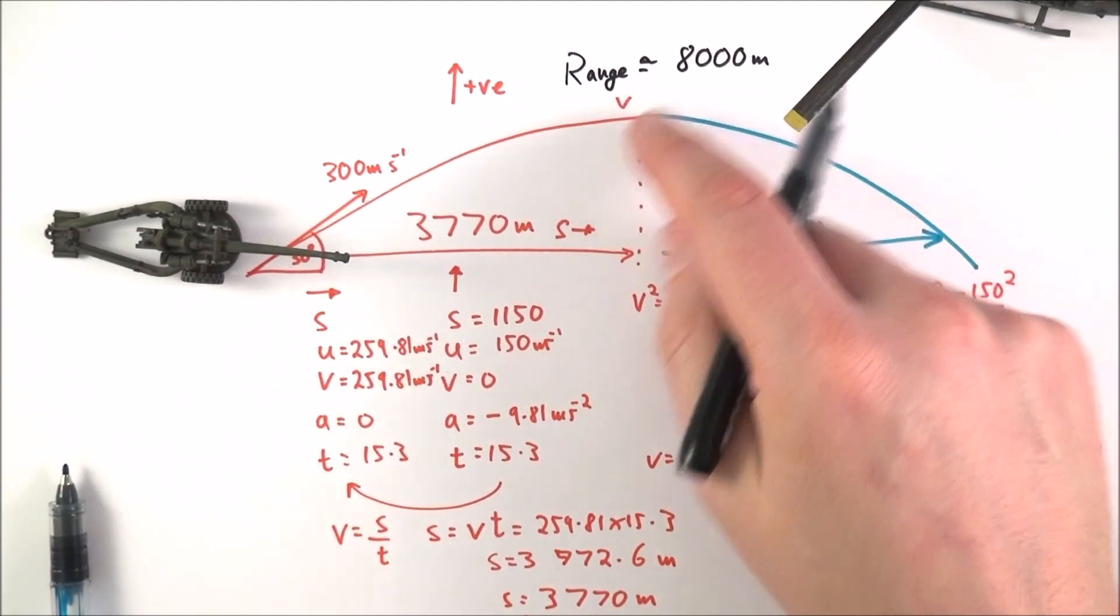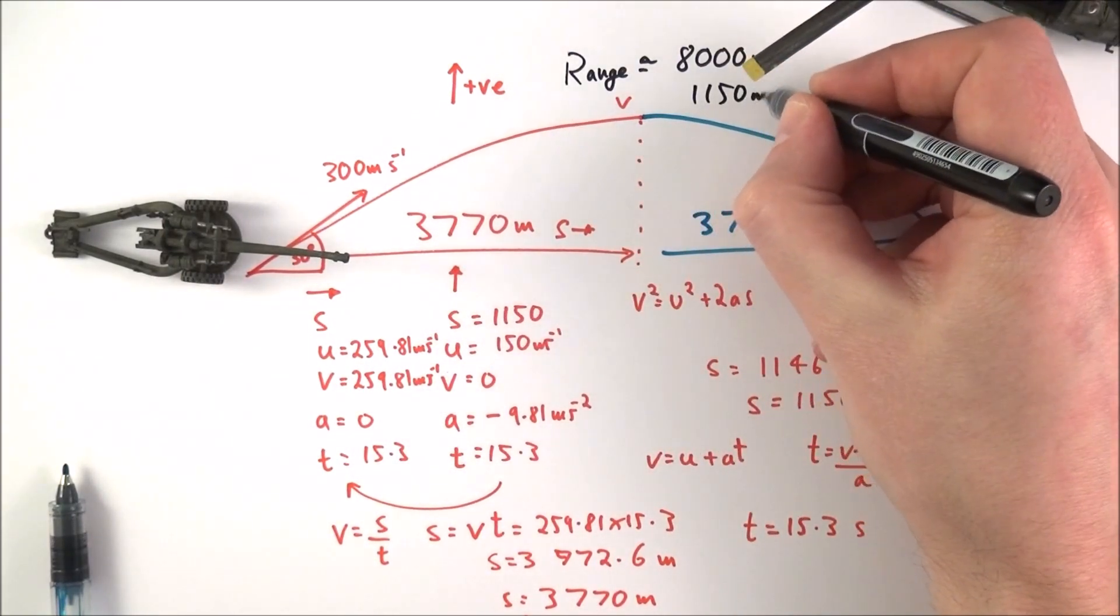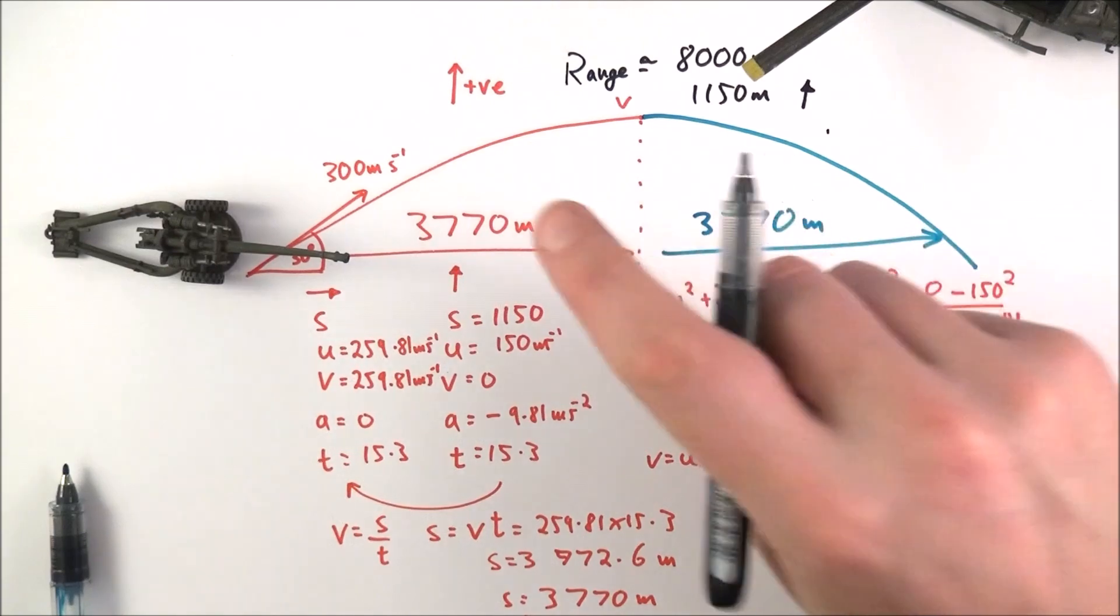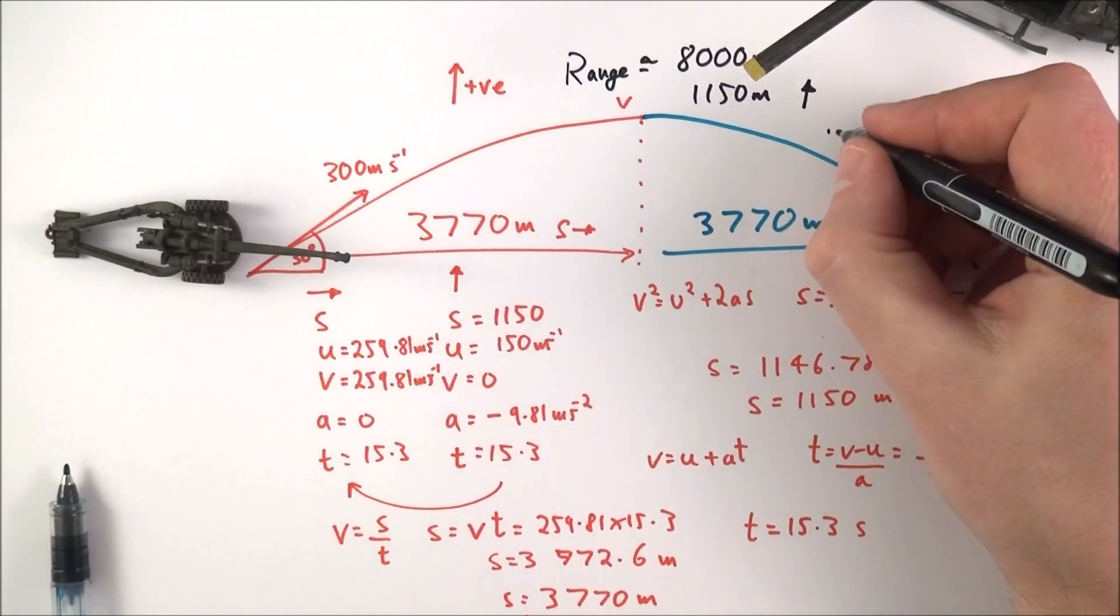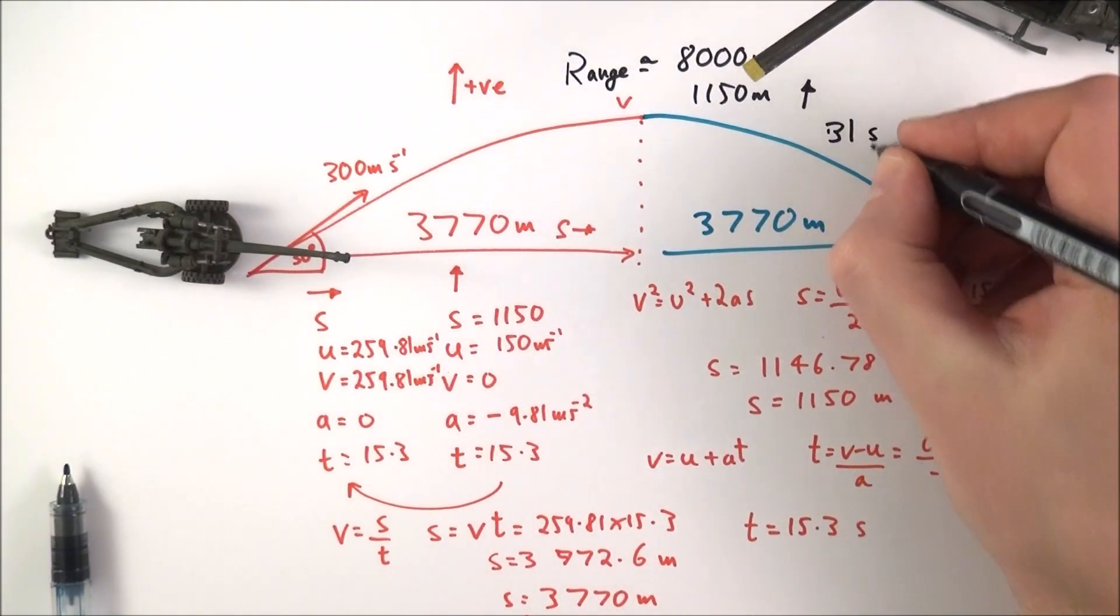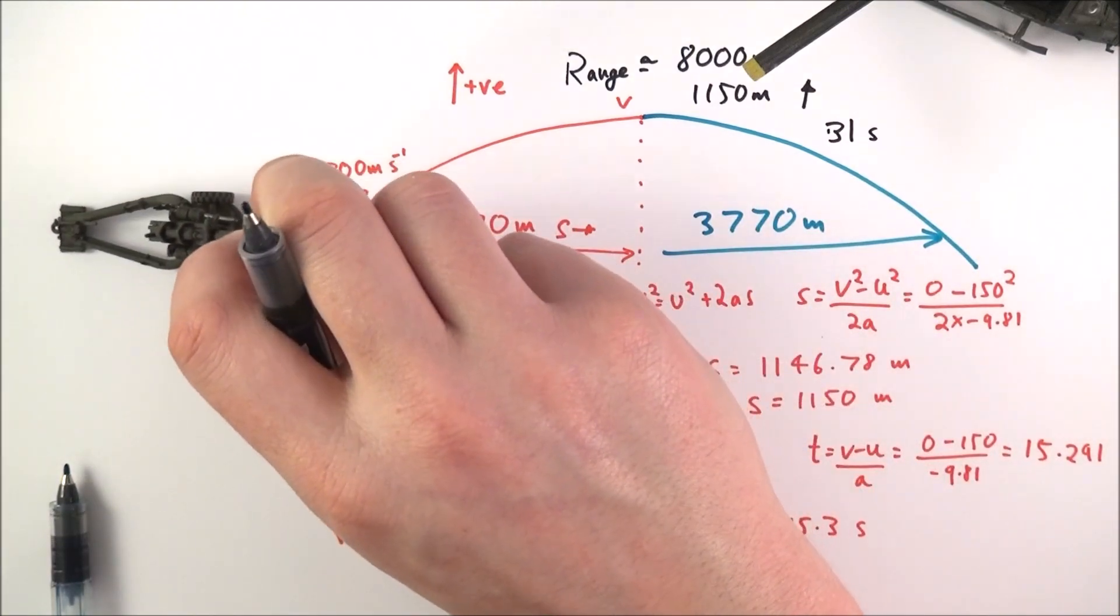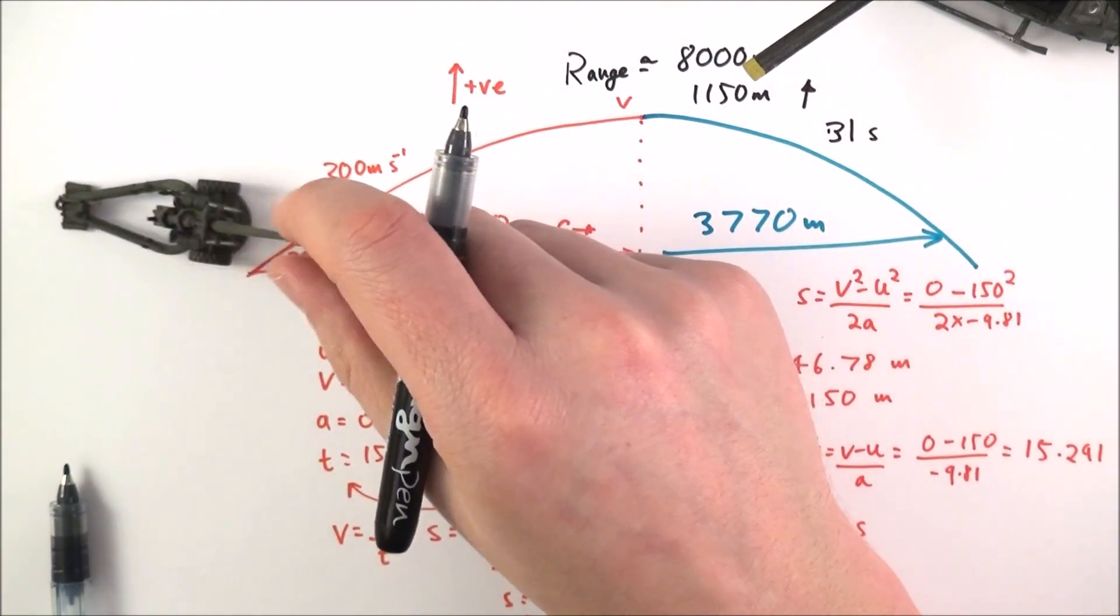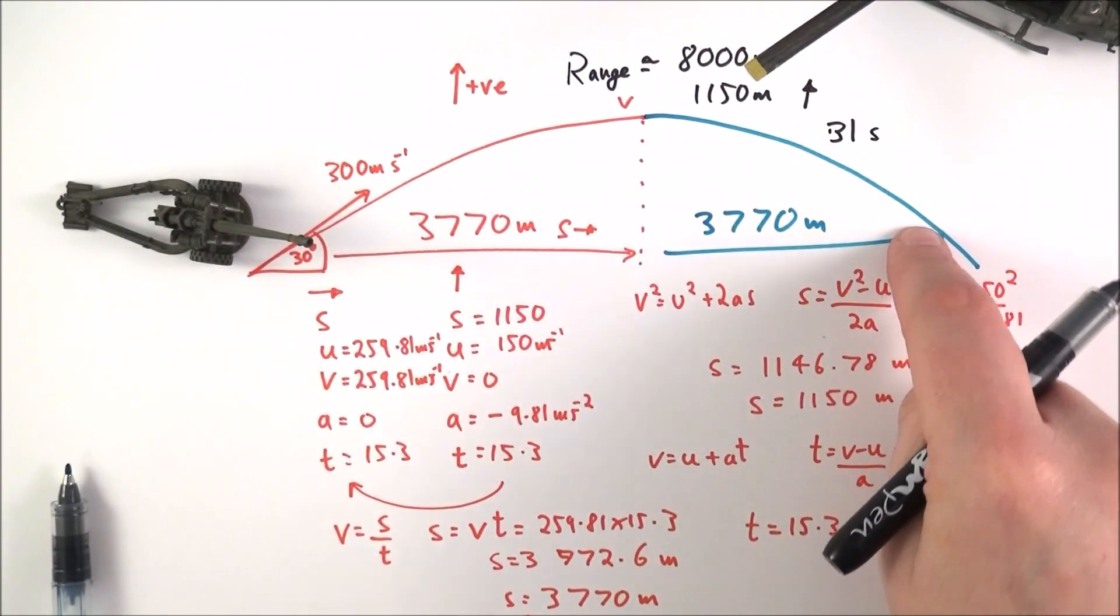How high does it go? About 1150 meters up, pretty high. The total time of flight, if it takes 15.3 seconds to go that far, is about 31 seconds. That's a reasonable amount of time for a projectile to be in the air. It might be called over the radio that you have shot 3-1, and 31 seconds later the round impacts with the target.